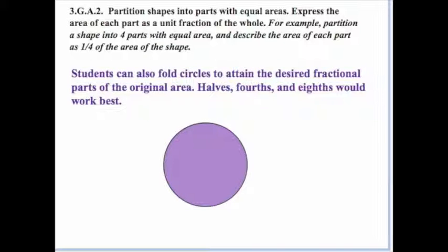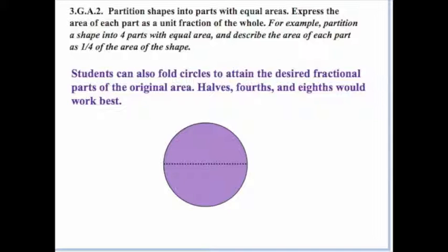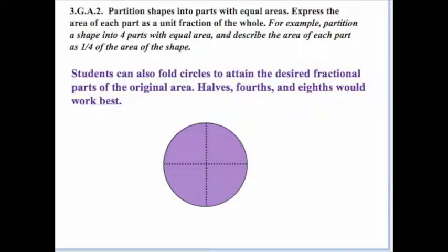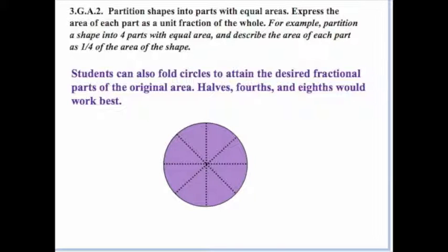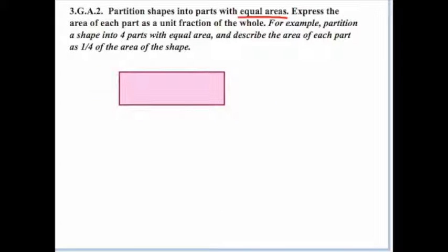Students can also fold circles to obtain the desired fractional parts for the original area. Halves, fourths, and eighths work best. Take a circle, fold it in half — when you unfold it, you'll have a crease showing two equal parts. Take the folded semi-circle and fold it again; when you unfold it, you'll have creases showing four equal areas. Fold it in half once more to get creases dividing the circle into eight equal areas.